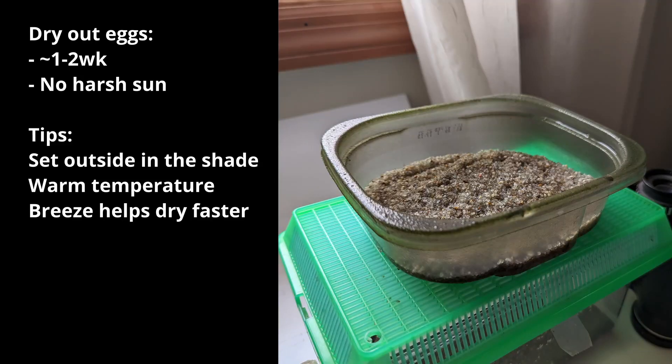After this, you're going to want to set it somewhere that it can be undisturbed for about two weeks to dry out. Preferably this isn't in the sun because you don't really want to cook these eggs. After these two weeks have passed, you can then begin preparing for the egg collection.